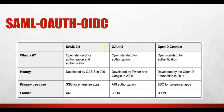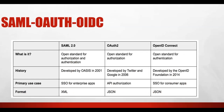To summarize the comparison: SAML is an open standard for both authentication and authorization, developed by OASIS in 2001, primarily used for enterprise SSO. OAuth, developed by Twitter and Google in 2006, is only for authorization — specifically API and temporary access authorization. OpenID Connect, used since 2014, adds authentication on top of OAuth and is used for consumer applications. SAML uses XML format, while OAuth and OIDC use JSON.